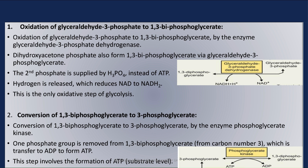Step 2 is the conversion of 1,3-bisphosphoglycerate to 3-phosphoglycerate, catalyzed by the enzyme phosphoglycerate kinase. One phosphate group is removed from 1,3-bisphosphoglycerate at carbon number 1, which is transferred to ADP to form ATP. This step involves the formation of ATP at substrate level, and this is the first ATP molecule produced at substrate level in glycolysis.